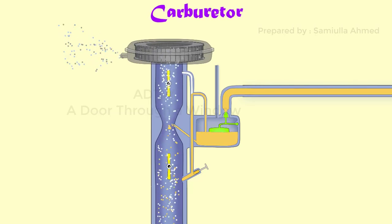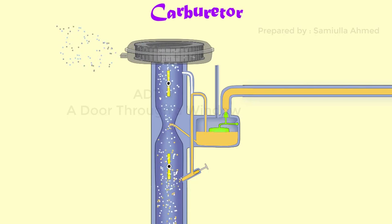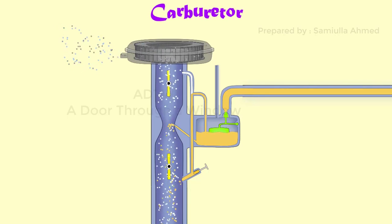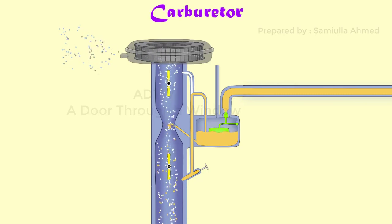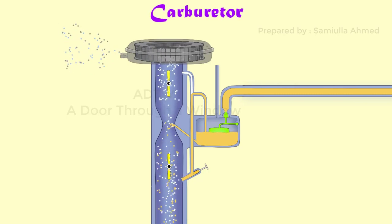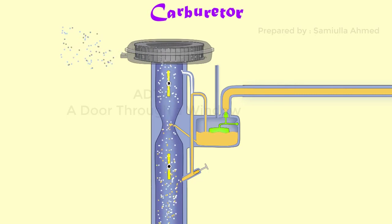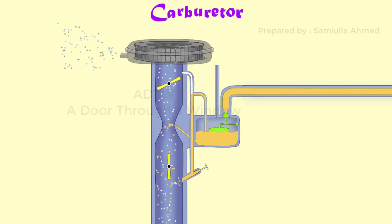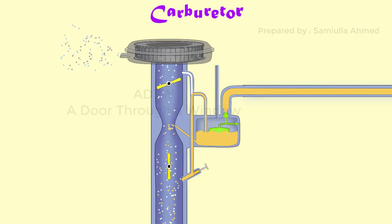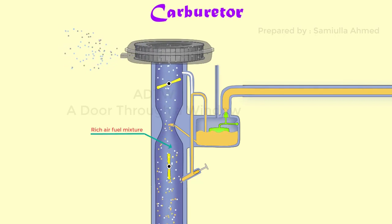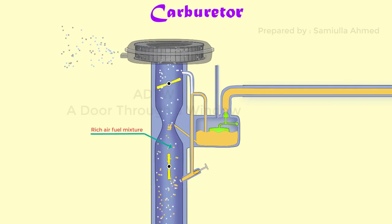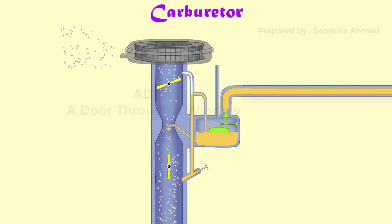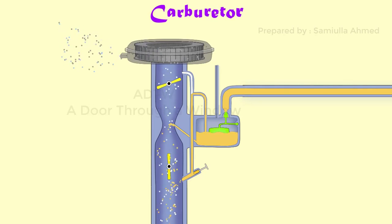Since during cold weather the engines usually do not start, this is because of lower temperature due to which the fuel does not vaporize and mix with air to give a uniform mixture. In this case, we close the choke valve to provide more fuel and less air to the engine cylinder, thus supplying a fuel-rich mixture and helping in starting of the engine in cold weather. This is how theoretically a carburetor works.